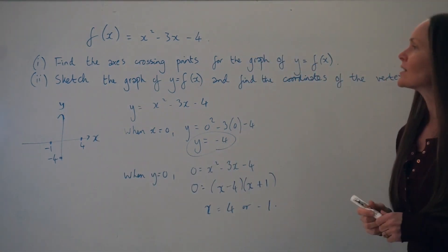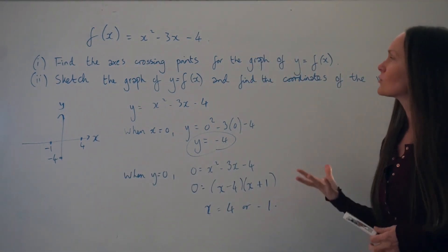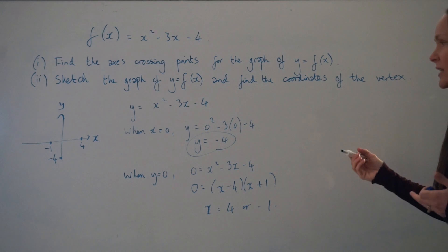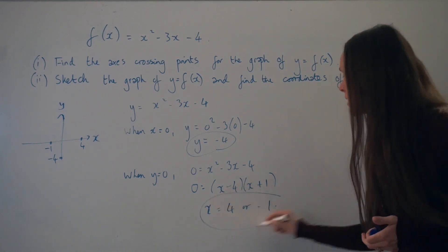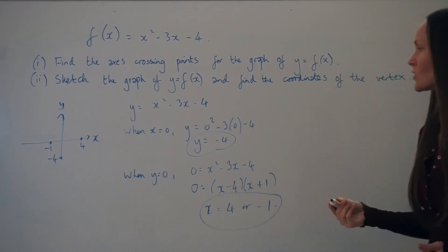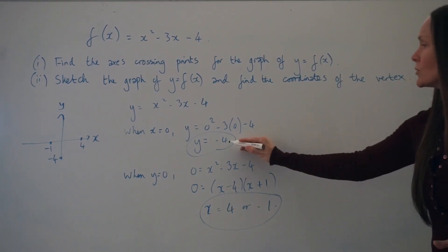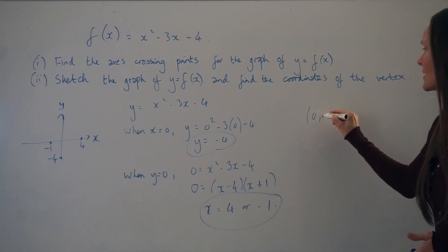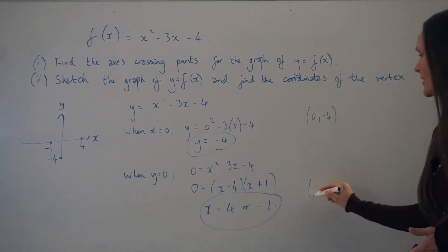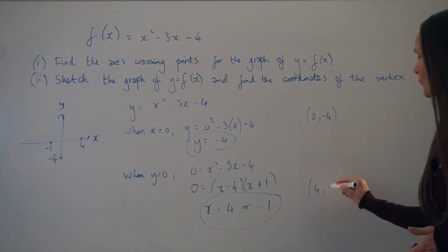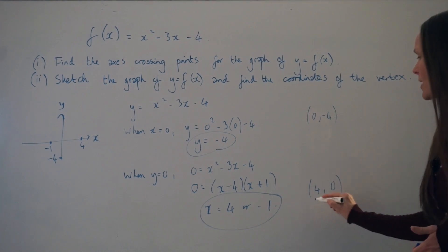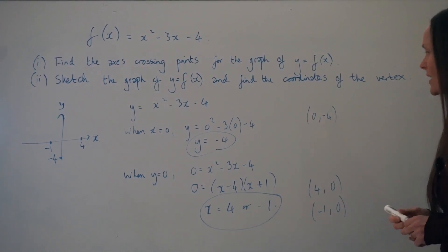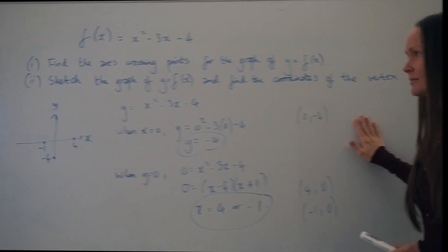So when it says find the axes crossing points for the graph y = f(x), we've done it. Writing them as coordinates: the y-intercept is (0, -4), and the x-intercepts are (4, 0) and (-1, 0). That's part 1.